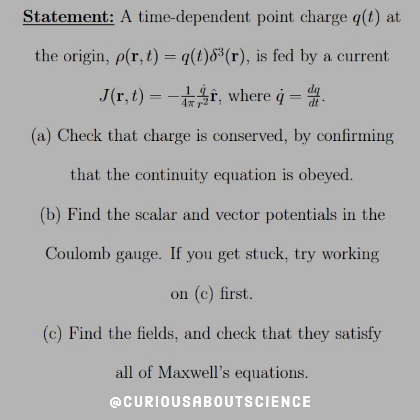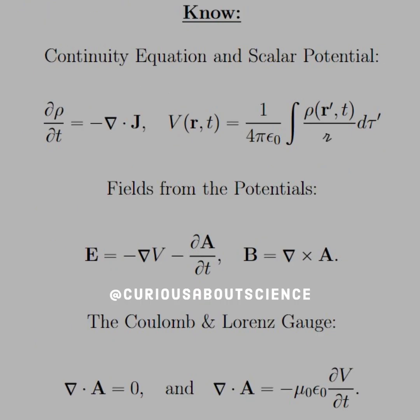Part B, find the scalar and vector potential in the Coulomb gauge. If you get stuck, try working on C first. But what is C? Find the fields and check that they satisfy all of Maxwell's equations. All right, fair enough.